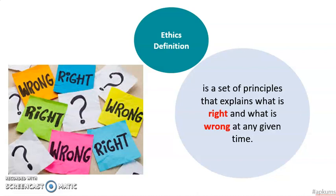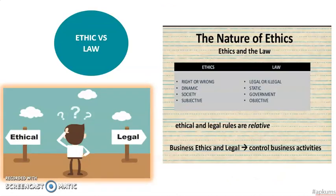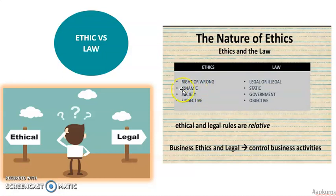When we talk about ethics, at the same time we must understand the law itself. Law and ethics work together to help control business activities. Ethics is about what is right or wrong to do in that society, in that environment. Ethics are dynamic — they might change due to changes in environment or society, and they are set by the society with a common interest. This is subjective, subject to human interpretation.